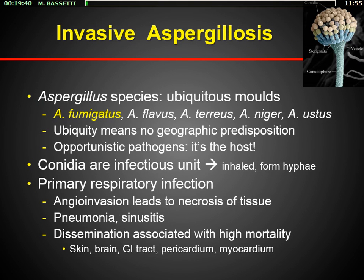Let's move to something about invasive aspergillosis. Aspergillus is a mold that is probably everywhere. We have more than one Aspergillus species, but the most important one is Aspergillus fumigatus. Its ubiquity means no geographic predisposition, and this is an opportunistic pathogen — it depends on the host. Conidia are the infectious unit; they can be inhaled and usually form hyphae.